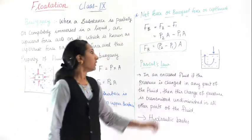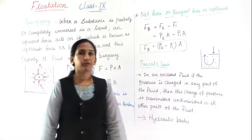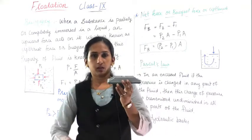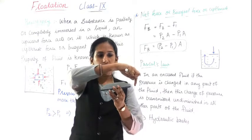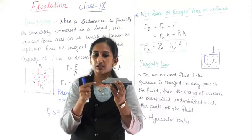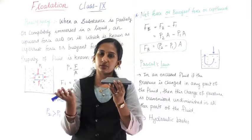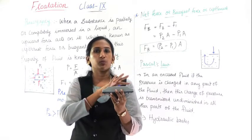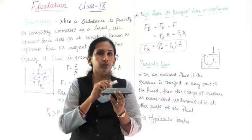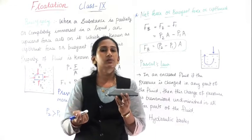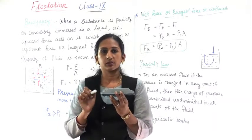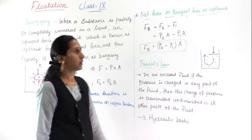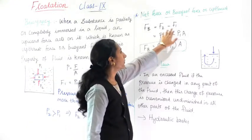Now we need to find the net force, which is also called the buoyant force or upthrust. Net force is found by subtracting the two forces. For example, if I apply the same force from both sides of a duster, the net force is zero. If more force is applied from one side, the net is in that direction. So net force is found by subtraction: buoyant force equals F2 minus F1.